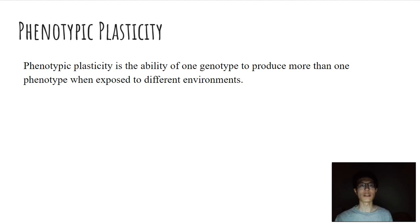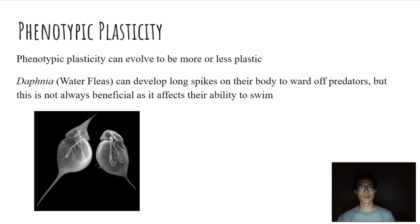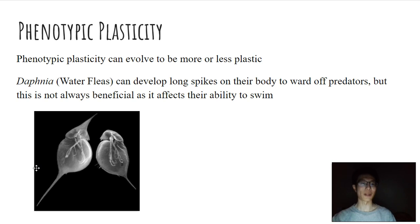One of these examples is with Daphnia, also known as water fleas, which look normally like this. But when in the presence of predatory fish, they can actually grow out spines, as shown here by the individual on the left. Normally they look more like the one on the right, but when there's a predatory fish around, they can change the shape of their entire body and grow these spines to protect themselves.